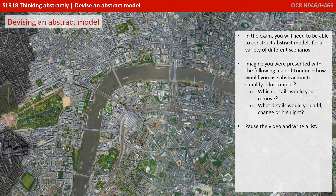Imagine you were presented with the following map of London. How would you use abstraction to simplify it for a tourist? Which details would you remove? What details would you add, change or highlight? Pause the video and write your own list.